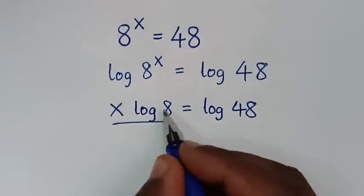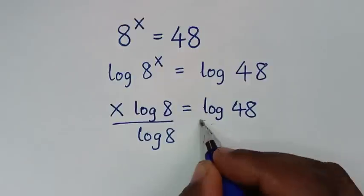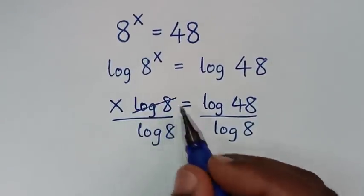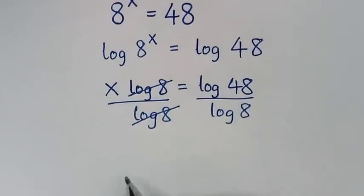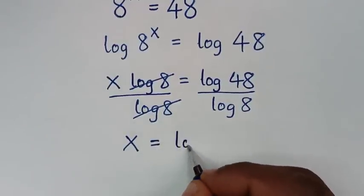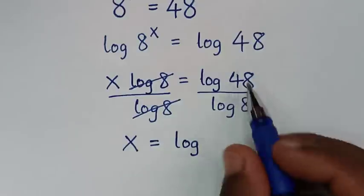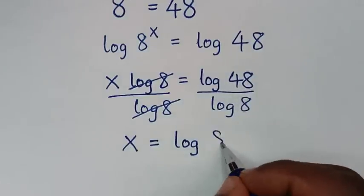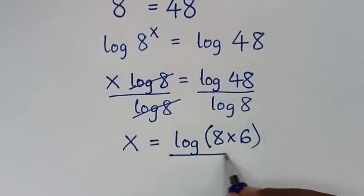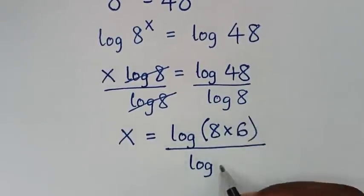Then we'll divide by log of 8 on both sides. So log of 8 will cancel with log of 8, and it will be x is equal to log of 48 over log of 8. Now 48 is the same as 8 times 6.